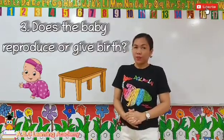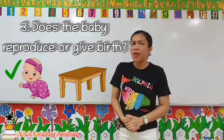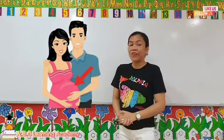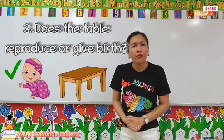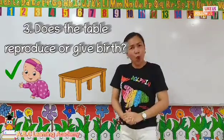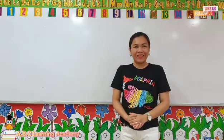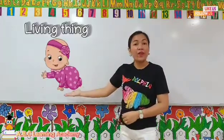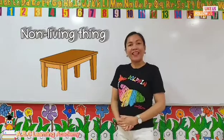Now let's answer the last question: does the baby reproduce or give birth? The answer is yes, of course. Once this baby will grow and turn into an adult, she can reproduce or give birth. Does the table reproduce or give birth? Of course no, the table won't reproduce or give birth. Therefore, we conclude that a baby is an example of a living thing and a table is an example of a non-living thing.